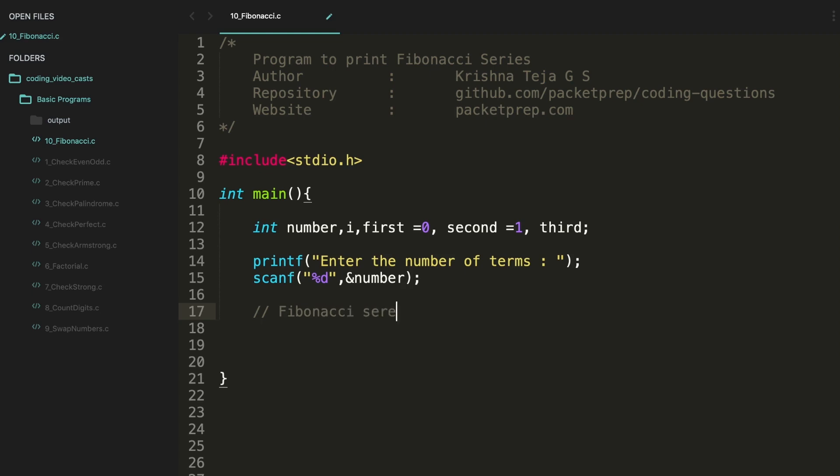So once we get the terms, we'll be storing it in the number. And let's go with the logic. We'll be using a for loop: i equals one. The loop has to iterate till we reach the number of terms, i plus plus. So first thing is I'll print the first number, percentage t. Let me use tab space, and first.